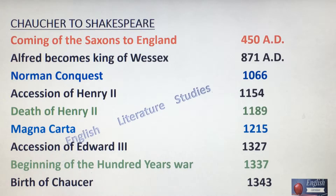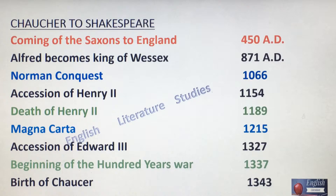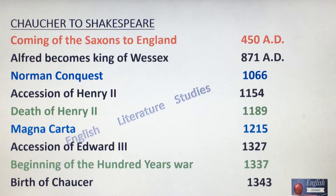Coming of the Saxons to England is 450 AD. Alfred becomes king of Wessex, 871 AD. Norman Conquest, 1066. Accession of Henry II, 1154. Death of Henry II, 1189. Magna Carta, 1215. Accession of Edward III, 1327. Beginning of the Hundred Years War, 1337. Birth of Chaucer, 1343.